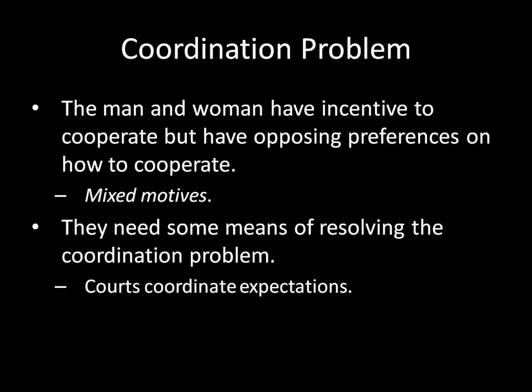Courts can coordinate expectations and resolve the inefficiency where failing to coordinate leads to the no-trade outcome. Despite the fact that courts rule against one party, you still have incentive to follow the ruling and avoid having no trade at all. That's how international courts can resolve coordination problems and get states to listen to their rulings despite having no enforcement mechanism — even though states live in anarchy and could simply ignore the ruling if they wanted to. International institutions can affect outcomes even without any enforcement power.